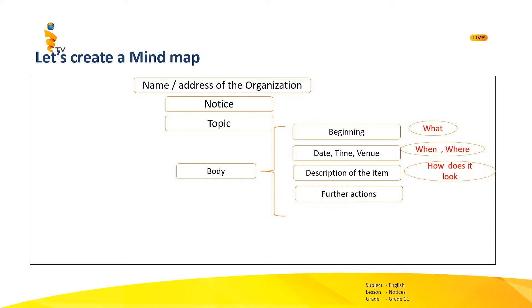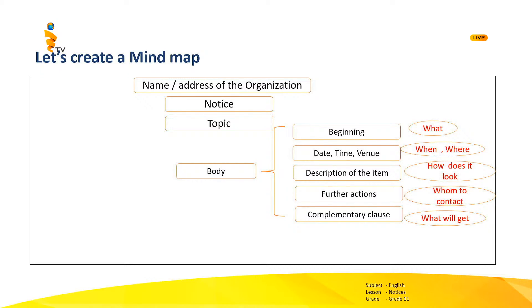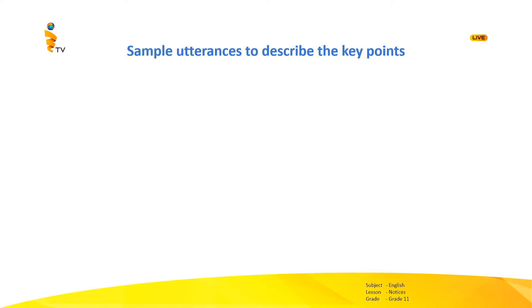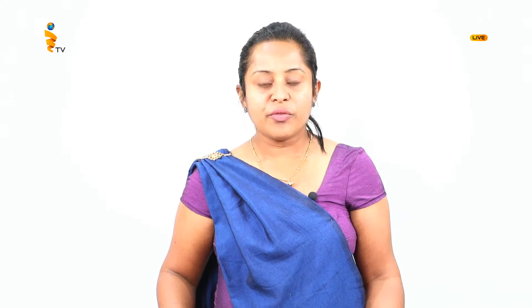After that, the further action to be taken should be mentioned — it talks about whom to contact. Finally, a complementary clause should be mentioned that talks about what you will get in return. When you write a complete body, you must give answers to all these WH questions. After the body, you have to write the date, put the signature and the designation. Now let's focus our attention on some sample utterances we can use for each key point identified in our mind map.